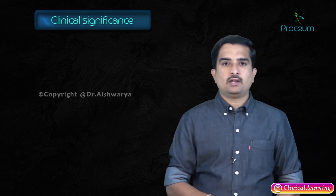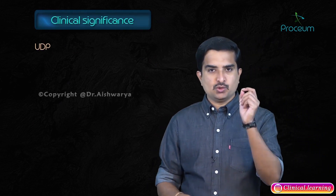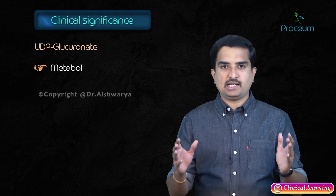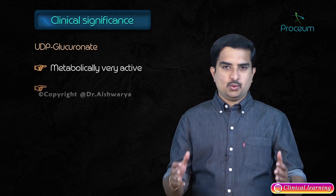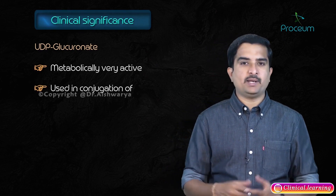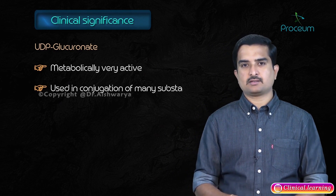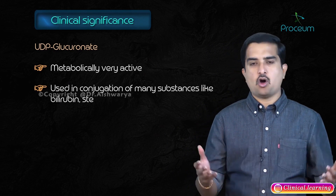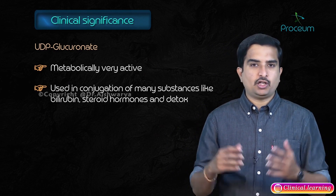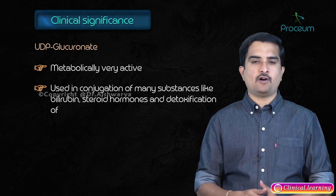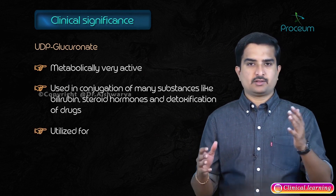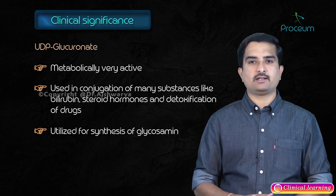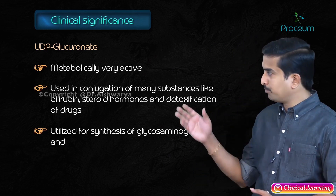The clinical significance of this pathway is that UDP-glucuronate is metabolically very active. It is used in the conjugation of many substances like bilirubin and steroid hormones, and also in the detoxification of drugs. It is also utilized for the synthesis of glycosaminoglycans and proteoglycans.